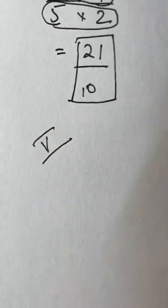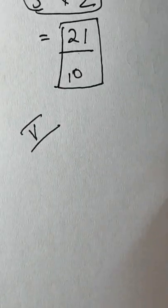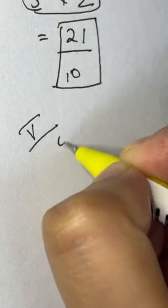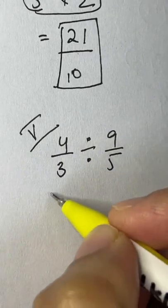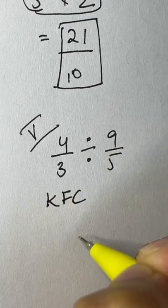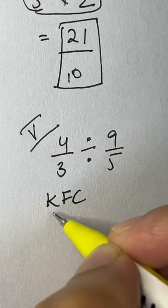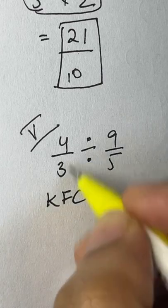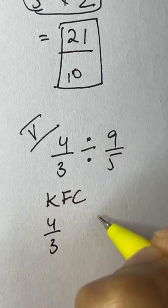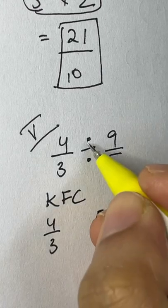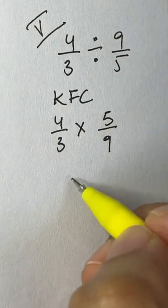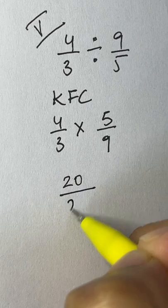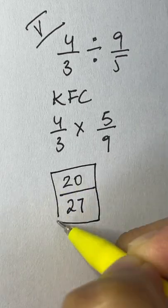The fifth and final short trick is division. Suppose you have 4/3 divided by 9/5. Use the KFC rule: Keep the first fraction, Flip the second fraction, and Change the division sign to multiplication. Then it's easy: 4 times 5 is 20, and 3 times 9 is 27. The answer is 20 over 27.